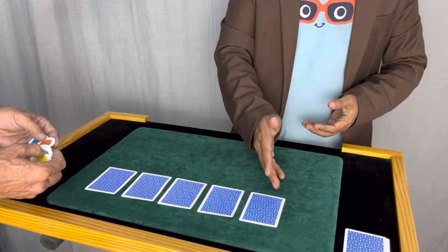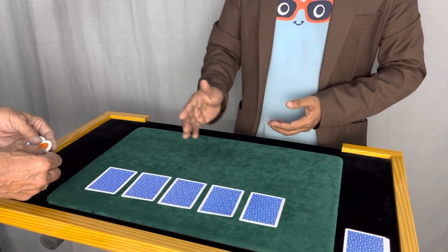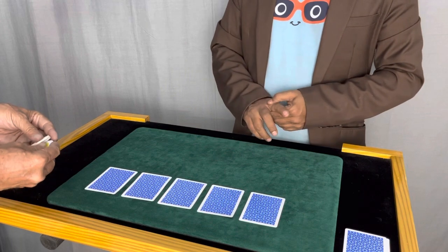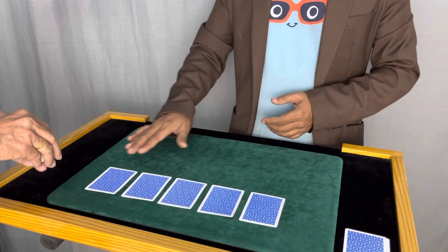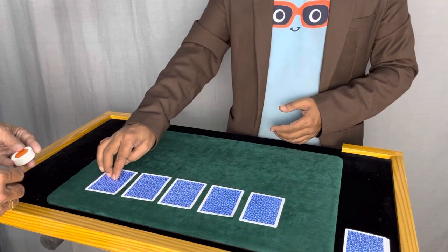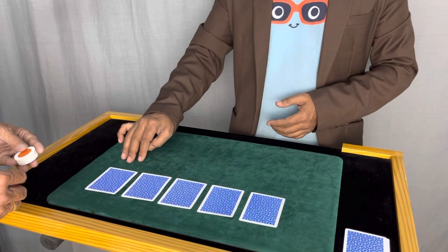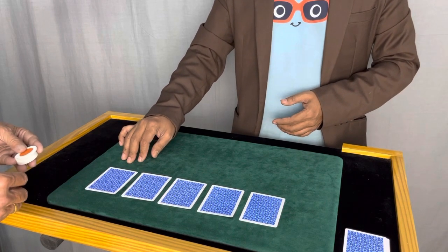Place one chip in front of each card, but before putting them, keep one thing in mind - you have a choice to say the truth or to lie. For example, if this card is yellow and you're putting a yellow chip in front of this card, it means you're saying the truth.